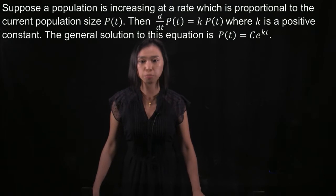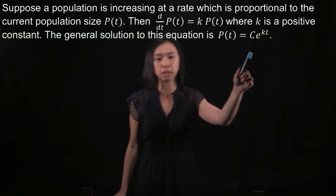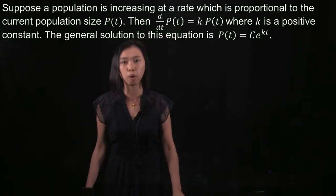The general solution to this equation is P(t) which is equal to C times e to the power of kt.